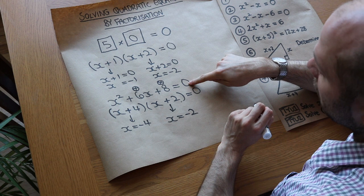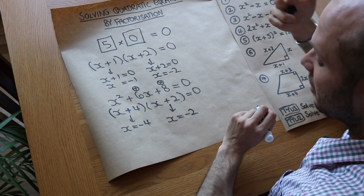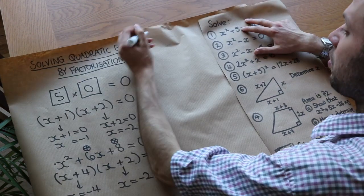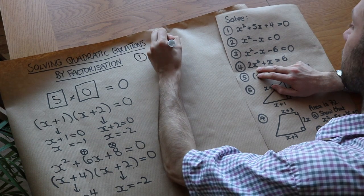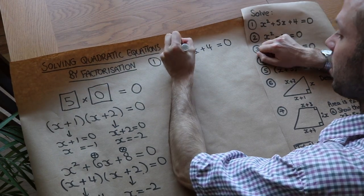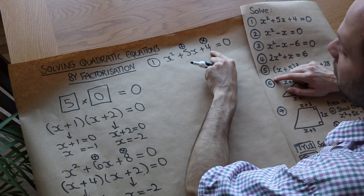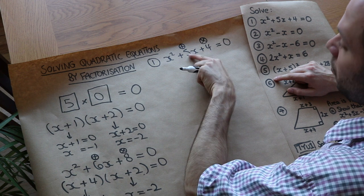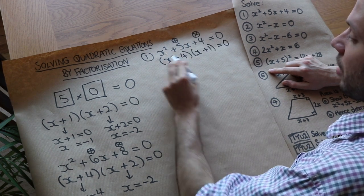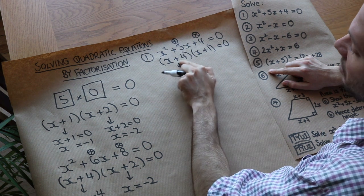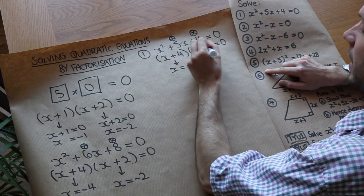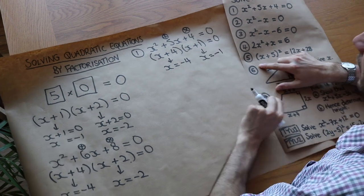So remember: step one is make sure zero is on one side. Step two is to factorize. Step three is to make each factor equal to zero to work out x. So for x squared plus five x plus four equals zero — zero is already on one side, so we need two numbers that add to give five and multiply to give four. Well four times one equals four and they add to give five, so it's x plus four times x plus one. So x is minus four or x is minus one.